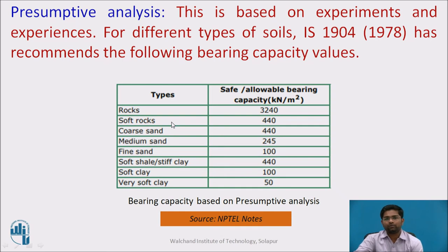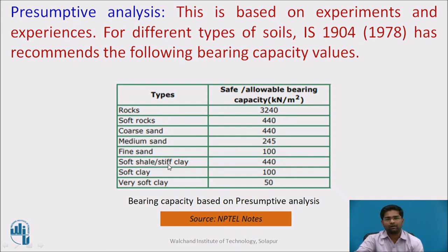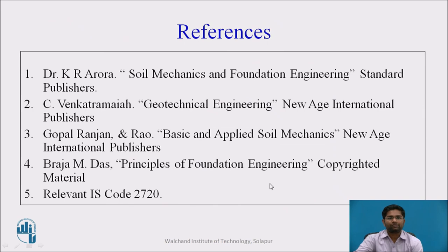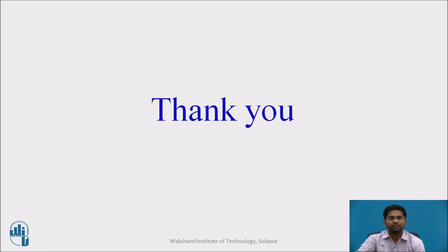These are the presumptive analyses which, based on experiments and experience, have suggested some values for SBC as per Indian Standard IS 1904:1978. The types of material include rock, soft rock, coarse and medium sand, fine sand, soft shale or stiff clay, soft clay, and very soft clay, with corresponding SBC values up to 50 kilonewton per meter square. These are the references which I referred for this video lecture. Thank you.